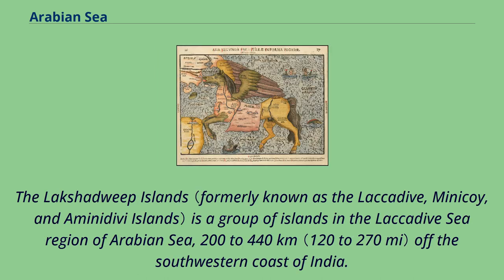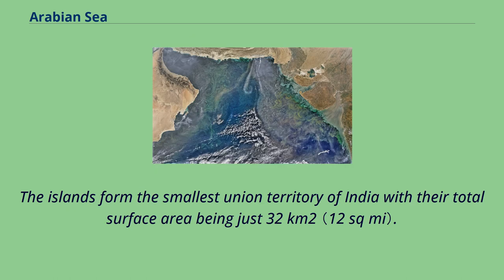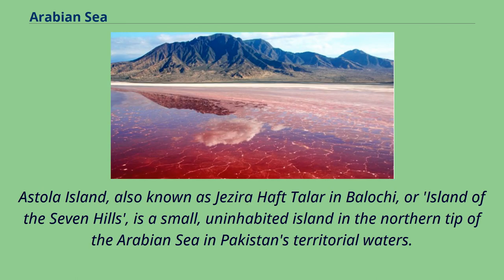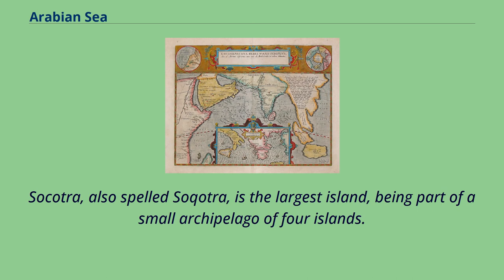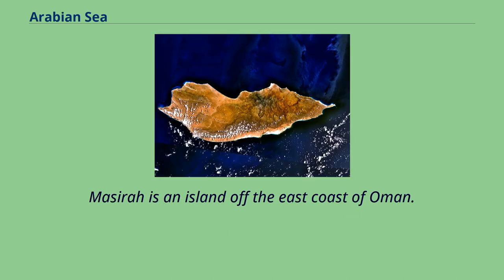The Lakshadweep Islands are a group of islands in the Lakshadive Sea region of the Arabian Sea, 200 to 440 km off the southwestern coast of India. The archipelago is a Union territory governed by the Union Government of India, forming the smallest Union territory with a total surface area of just 32 km². The islands are the northernmost of the Lakshadweep-Maldives-Chagos group. Astola Island, also known as Jezira Haft Talar or Island of the Seven Hills, is a small uninhabited island at the northern tip of the Arabian Sea in Pakistan's territorial waters. Socotra is the largest island, part of a small archipelago of four islands, lying about 240 km east of the Horn of Africa and 380 km south of the Arabian Peninsula. Masaira is an island off the east coast of Oman.